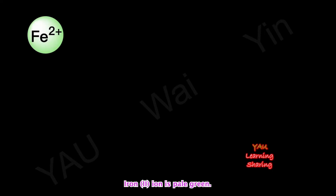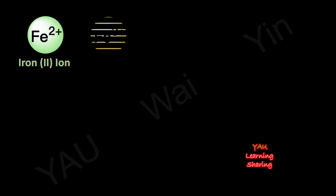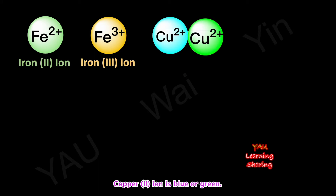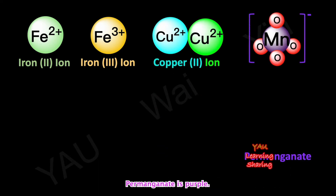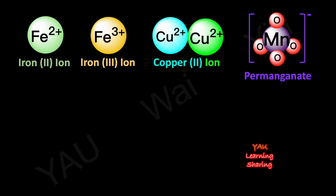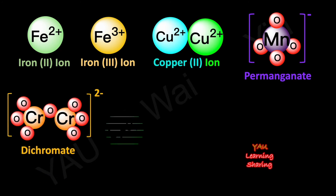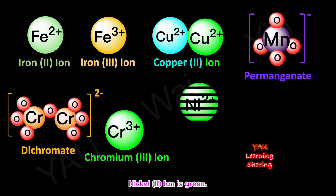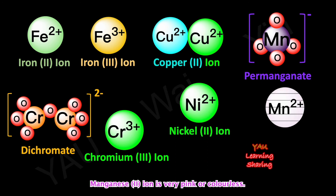Here are some examples of colorful ions. Iron 2 ion is pale green, iron 3 ion is yellow brown, copper 2 ion is blue or green, permanganate is purple, dichromate is orange, chromium 3 ion is green, nickel 2 ion is green, and manganese 2 ion is very pink or colorless.